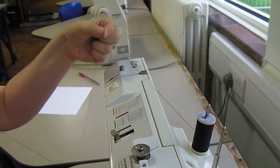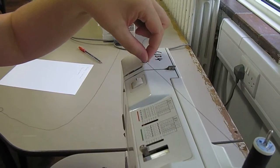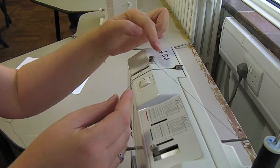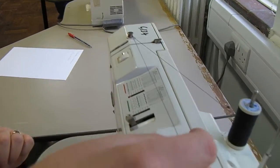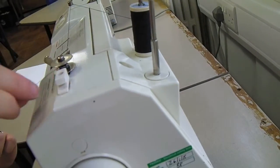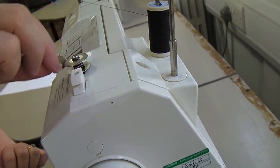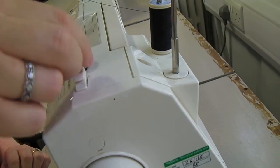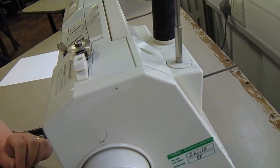Take your thread across to the left and wind it around the thread holder. It should go around clockwise. Take your cotton across to your bobbin and wind it around the bobbin two or three times. Then cut your excess thread off.